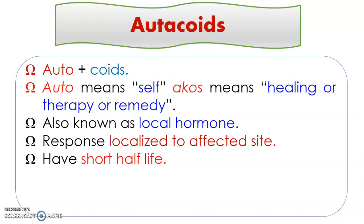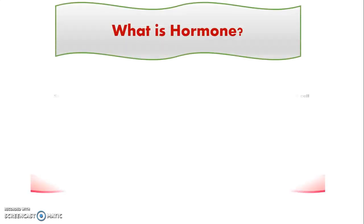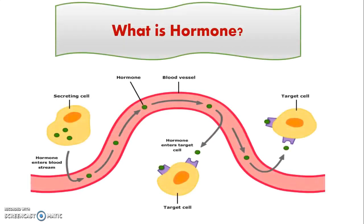Autocoids have a very short half-life, which is why their action is also of short duration. They do not have any similarity with general hormones. Hormones are substances produced by one cell that travel through blood circulation to reach distant organs and target cells, where they bind to receptors and transduce their actions.